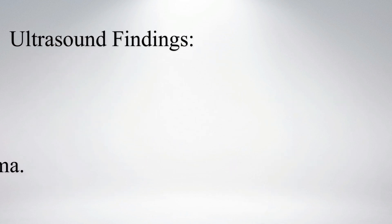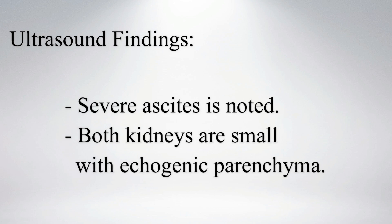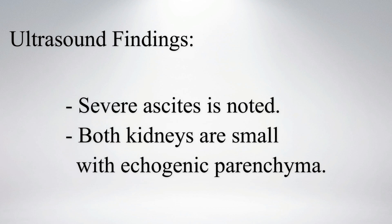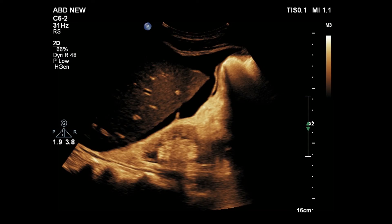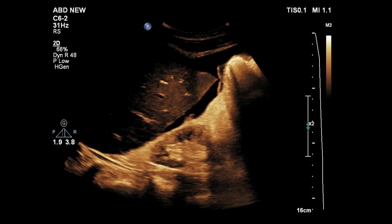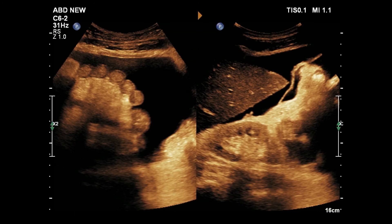On ultrasound, both kidneys appear small with echogenic parenchyma. Severe ascitic fluid is noted within the abdominal cavity. You can see an echogenic small right kidney of around 7 cm length and anechoic fluid at Morrison's pouch. Fluid extends up to the upper pole of the right kidney.